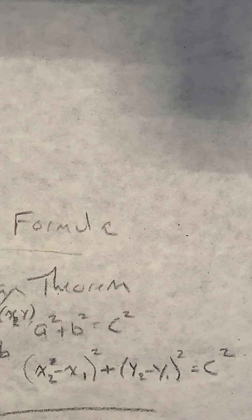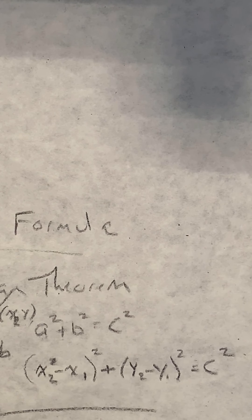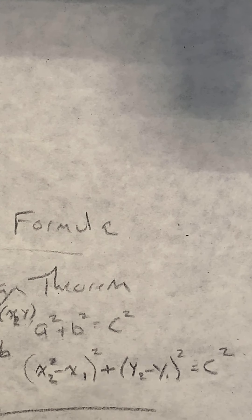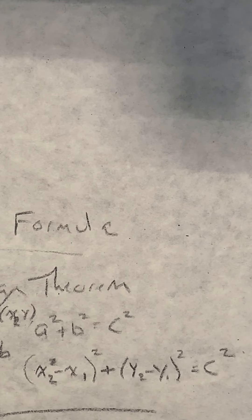So that's why in the distance formula, when you see it written, it's got this big radical symbol over this stuff: X2 minus X1 squared plus Y2 minus Y1 squared. And that equals your distance.